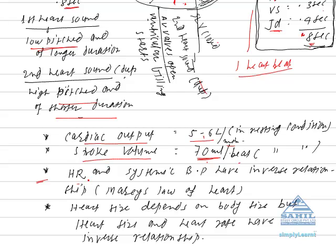This relationship between heart rate and systemic blood pressure is called Marey's law of heart. When heart rate is less, it causes vasodilation and blood pressure decreases.